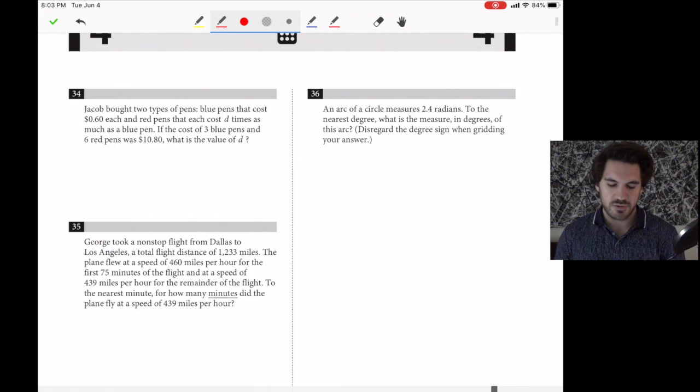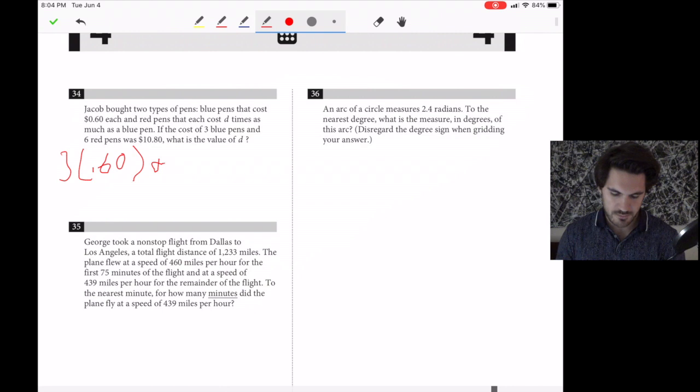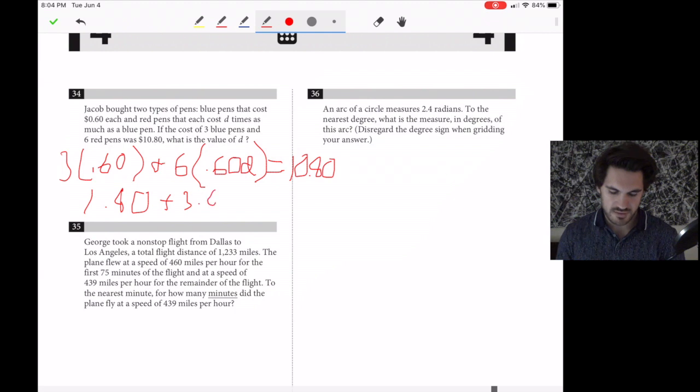Number 34. Jacob bought two types of pens: blue pens that cost 60 cents each, and red pens that each cost d times as much as a blue pen. The cost of three blue pens and six red pens was $10.80. What is d? Set up an equation. Three blue pens is 3 times 0.6, plus six red pens is 6 times 0.6 times d, equals 10.80. Do the math: 1.80 plus 3.6d equals 10.80. So 3.6d equals 9, and d equals 2.5.